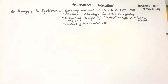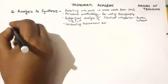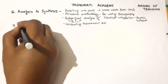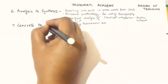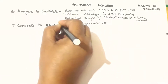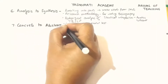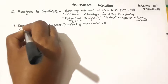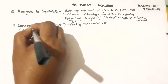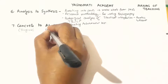The next maxim we are going to study is Concrete to Abstract. Concrete means things which can be felt or seen, or which you can perceive through your senses — you can smell them or feel their presence. Whereas abstract means they are non-physical. So concrete means tangible and abstract means non-physical.